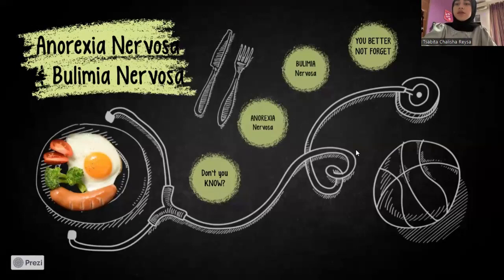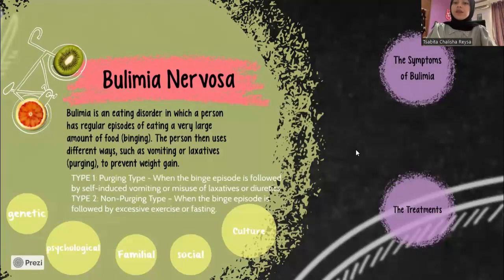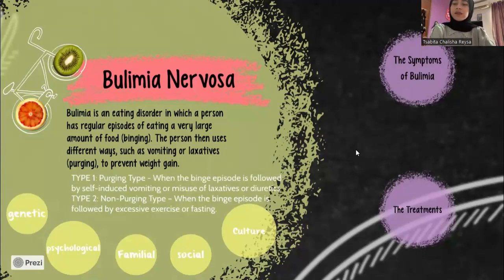After discussing anorexia nervosa, let's move on to bulimia nervosa. Bulimia is an eating disorder in which a person has regular episodes of eating a very large amount of food, during which the person feels a loss of control over eating. The person then uses different methods, such as vomiting or laxatives, to prevent weight gain. There are two types of bulimia. The first is the purging type, when the binge episode is followed by self-induced vomiting or misuse of laxatives or diuretics — the most common form of bulimia. The second type is the non-purging type, when the binge episode is followed by excessive exercise or fasting.